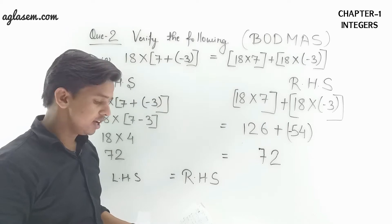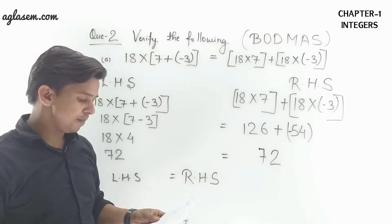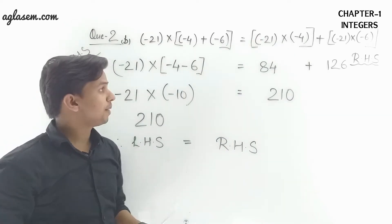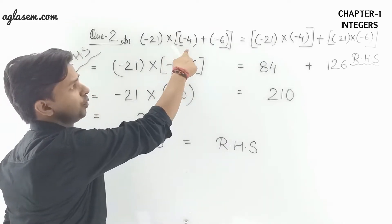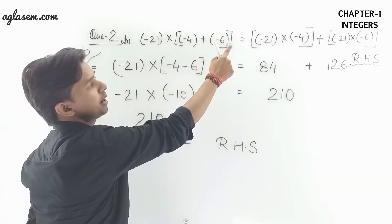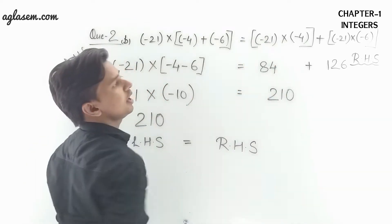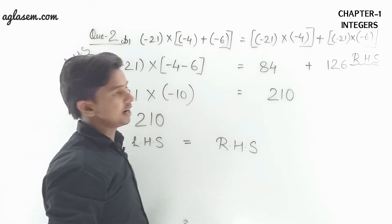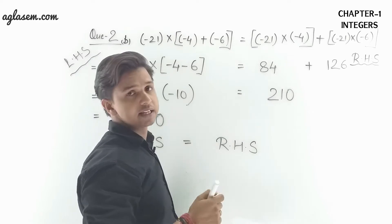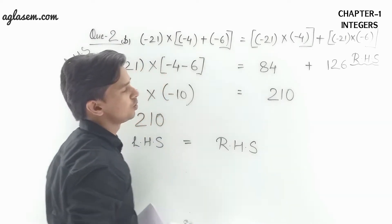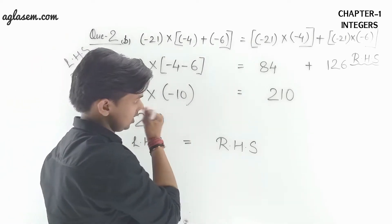Coming to the next part from the same question — question number 2, Part B. The values for Part B are: (-21) × ((-4) + (-6)) = ((-21) × (-4)) + ((-21) × (-6)). We have to verify that LHS equals RHS.